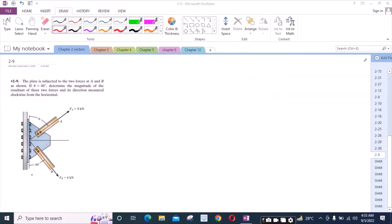Welcome to the Solutions Manual. In this video, we will solve problem 2-9 from R.C. Hibbeler Engineering Statics Twelfth Edition. According to this problem, the blade is subjected to two forces at A and B as shown. If theta equals 60 degrees, determine the magnitude of the resultant of these two forces and its direction measured clockwise from the horizontal.